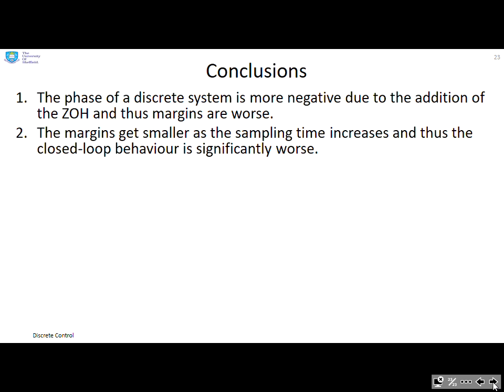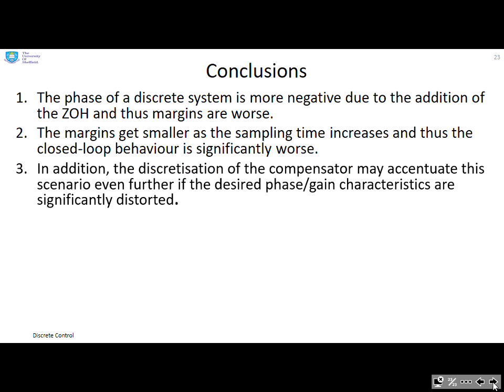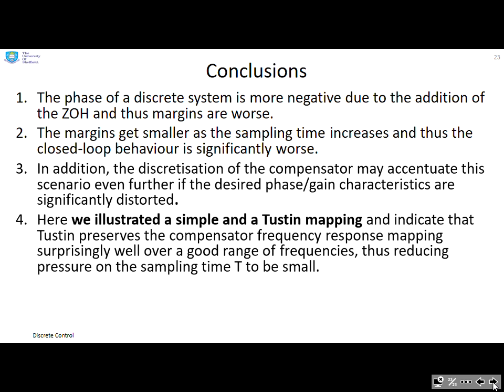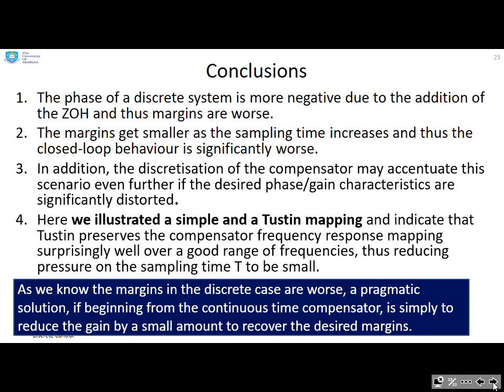Some conclusions then. The phase of a discrete system is more negative due to the addition of the zero-order hold, and thus your margins are going to get worse. And if the margins get smaller as the sampling time increases, the closed-loop behavior is also going to be worse. In addition, you've got to discretize the compensator, and this may make the scenario even worse if the desired phase and gain characteristics are significantly distorted by the mapping that you use. Here we've illustrated a simple method and a Tustin mapping. And basically we've indicated that Tustin preserves the compensator frequency response pretty well over a good range of frequencies, as long as T obviously is not too large. Now, a key point here is the margins in the discrete case are worse. Irrespective of what we do, they're worse. So a pragmatic solution, if you're beginning from the continuous time compensator, is simply to reduce the gain by a small amount in order to recover the desired margins. Thank you.